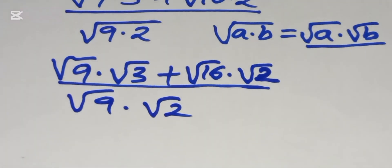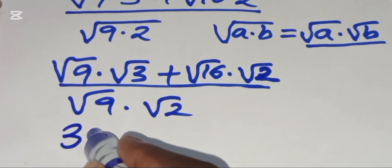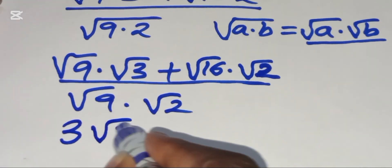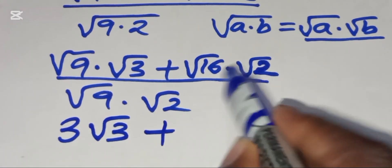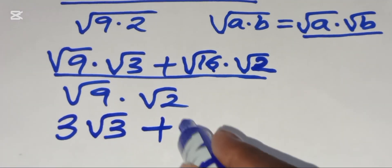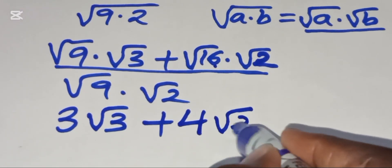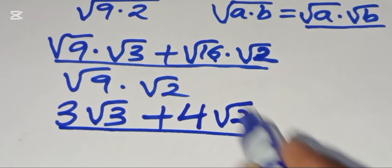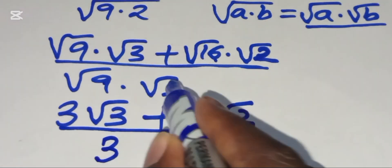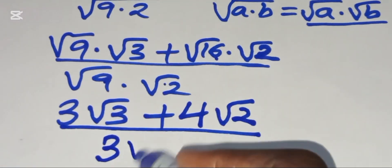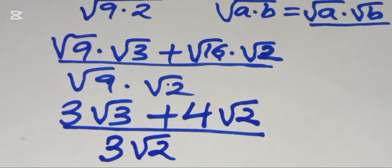Square root of 9 is equal to 3, so we have 3 square root of 3, plus square root of 16, which is 4, multiplied by square root of 2, divided by square root of 9 which is equal to 3, multiplied by square root of 3 and square root of 2.